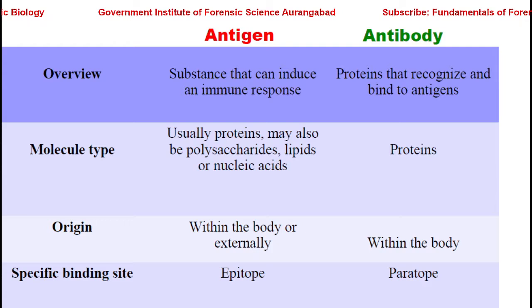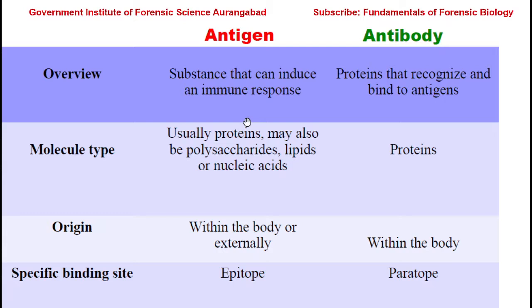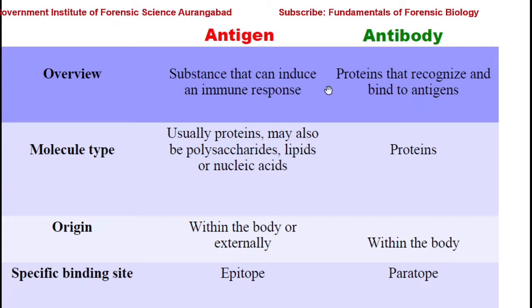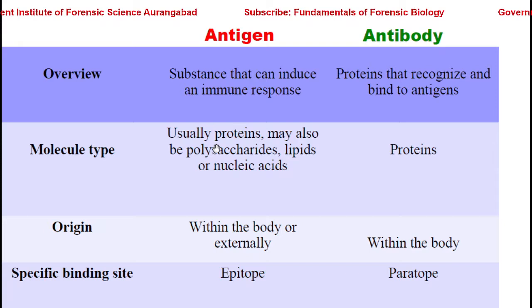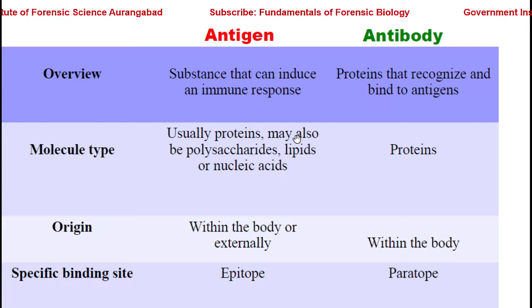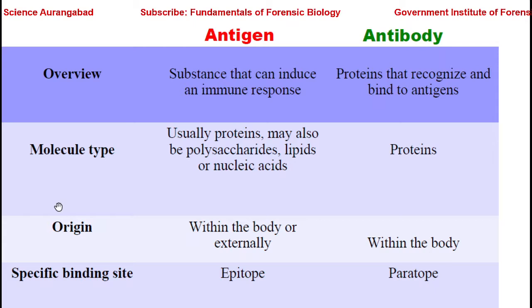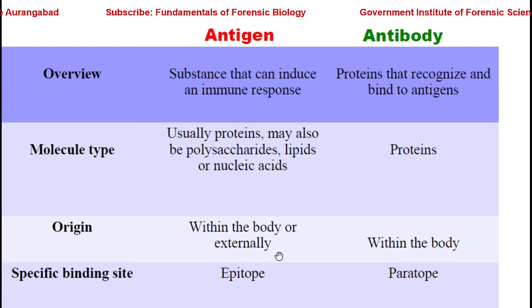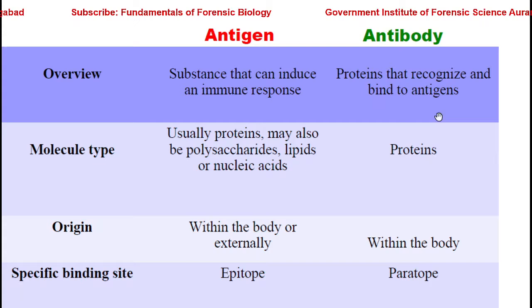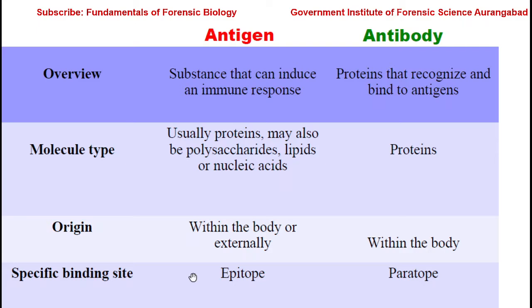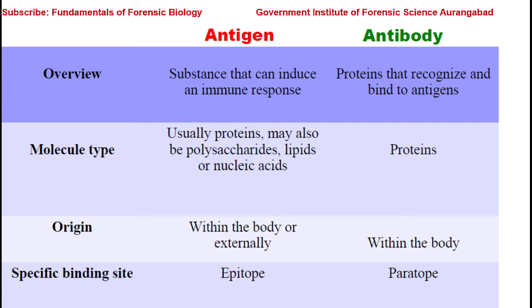In brief, antibodies cling to antigens to either sterilize or kill the target cells. Comparing antigen and antibody: an antigen is a substance that induces an immune response, while antibodies are proteins that recognize and bind to the antigen. Antigens are usually proteins, polysaccharides, lipids, nucleic acids, or combinations. Antibodies are proteins made up of amino acids. Antigens can originate within the body or from external sources like viruses, bacteria, or dust particles, whereas antibodies are always produced within the body. The antigen's specific binding site is the epitope, while on the antibody surface it is the paratope, which interacts with the epitope to show a specific response.